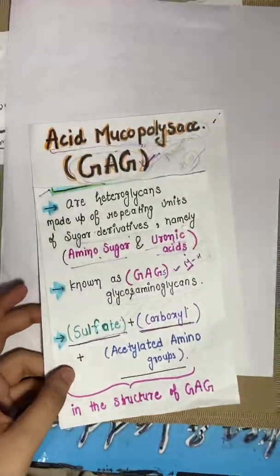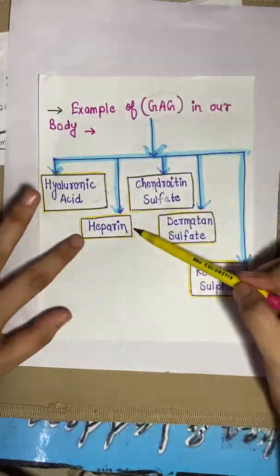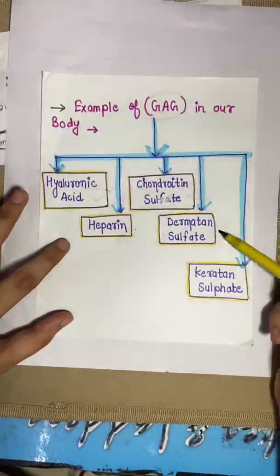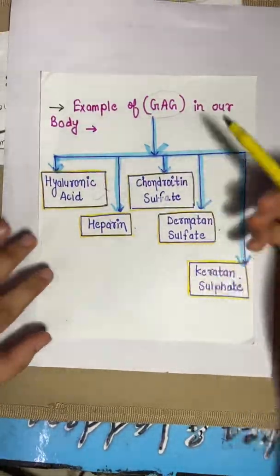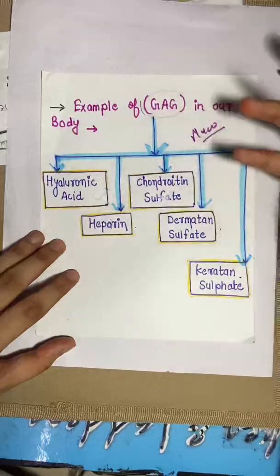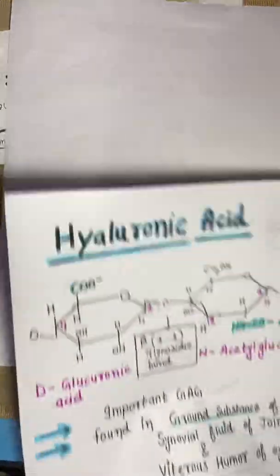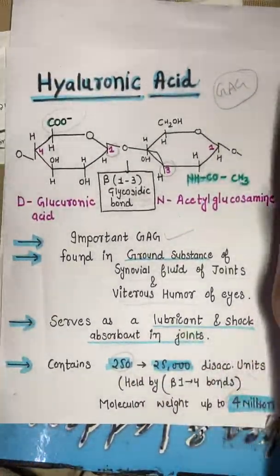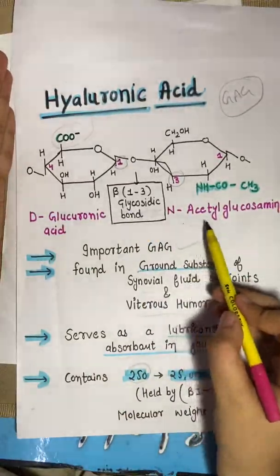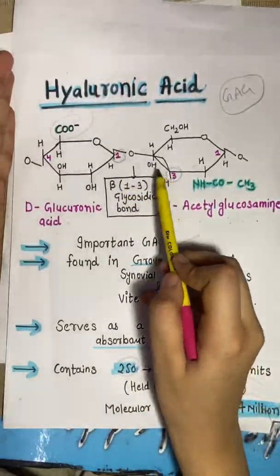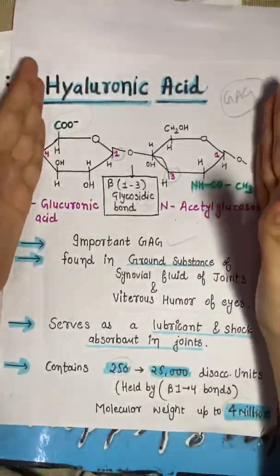There are four or five types of GAG, which are heteropolysaccharides. The first one we will study is hyaluronic acid. Hyaluronic acid is a disaccharide unit made of D-glucuronic acid and N-acetyl glucosamine joined at the first and third carbon by a beta-1,3 glycosidic bond.